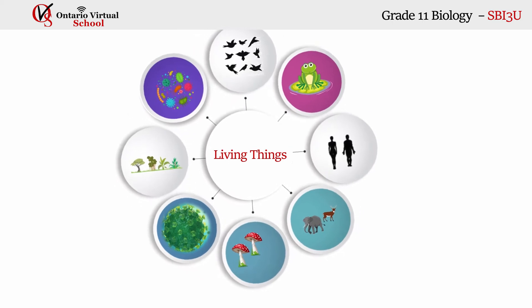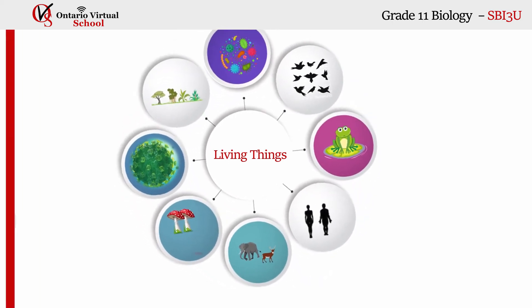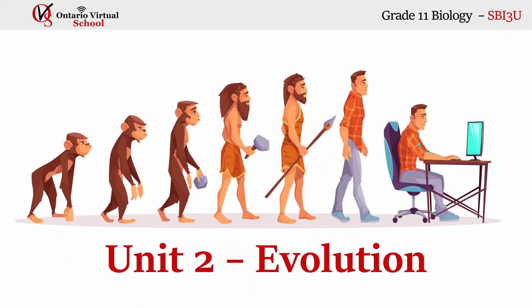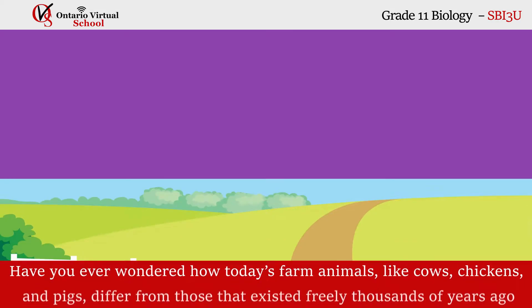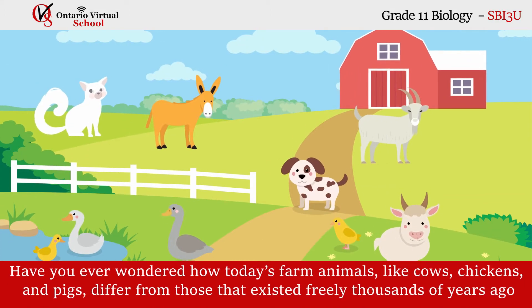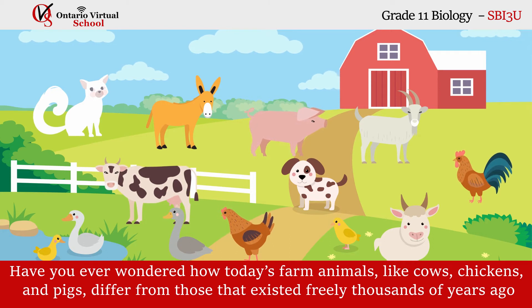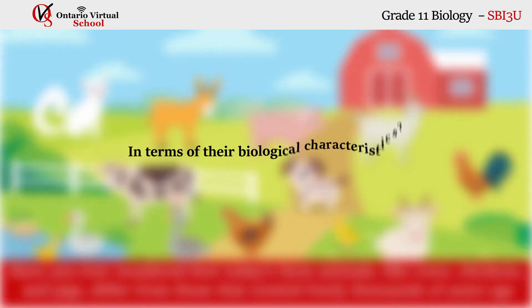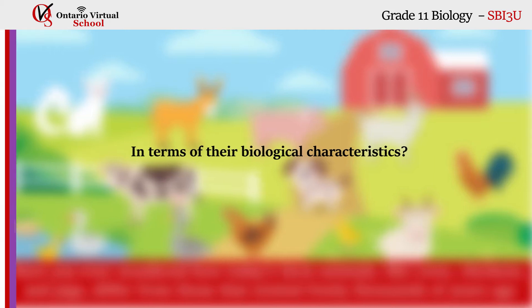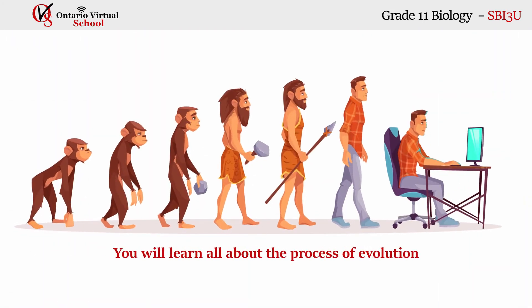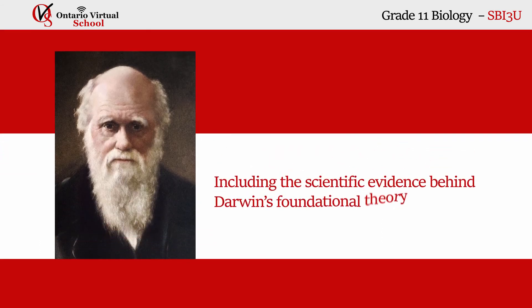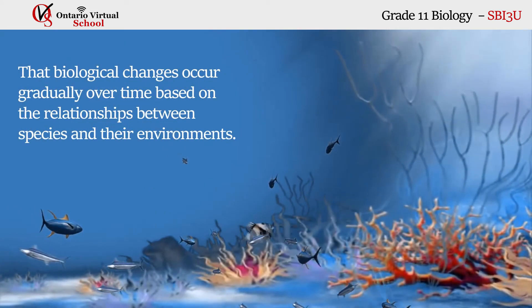Unit 2: Evolution. Have you ever wondered how today's farm animals — like cows, chickens, and pigs — differ from those that existed freely thousands of years ago in terms of their biological characteristics? In this unit, you will learn all about the process of evolution, including the scientific evidence behind Darwin's foundational theory that biological changes occur gradually over time.